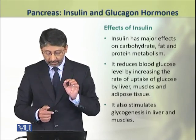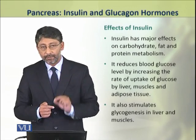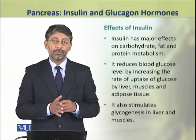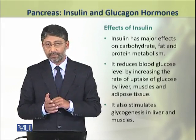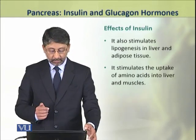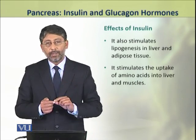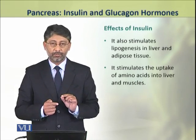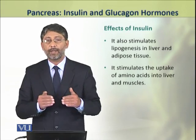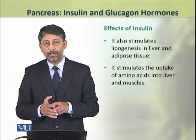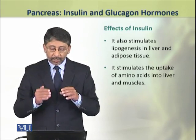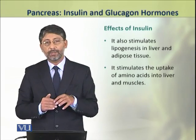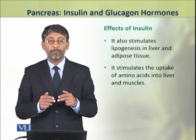Insulin stimulates glycogenesis in the liver and muscles, which means conversion of glucose into glycogen. It also stimulates lipogenesis in liver and adipose tissue, which is the synthesis of complex lipids from fatty acids. Insulin also stimulates the uptake of amino acids into the liver and muscles.